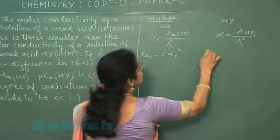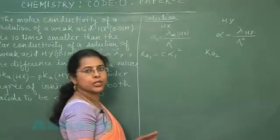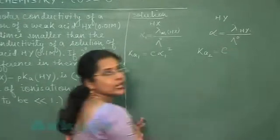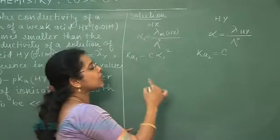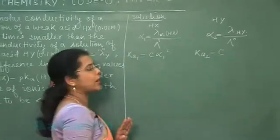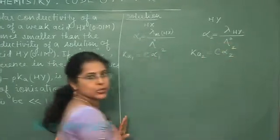This one is the second acid. Second acid के ionization constant को Ka2 से हमने represent किया. This is again C alpha square. अब यहाँ भी alpha time है, कोई confusion नहीं हो. इसलिए हमने इसे alpha 2 mark कर दिया. So this is C alpha 2 whole square.